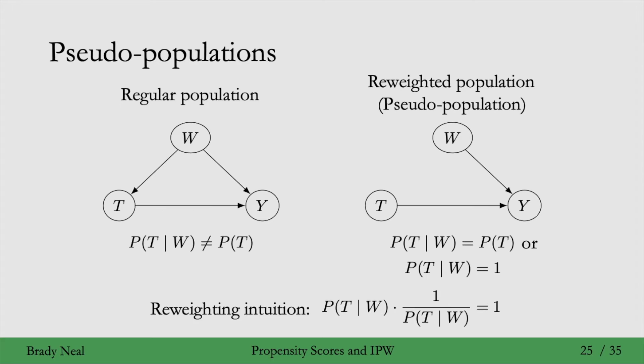More specifically, we re-weight by the reciprocal of the propensity score, by the inverse probability of treatment. The intuition for this re-weighting is that we take this conditional distribution P(T|W) and we just re-weight it by the inverse probability of treatment. Those two cancel, and we end up getting 1. Importantly, the thing that we end up getting does not depend on W. By multiplying by the reciprocal of the propensity score, we've basically deleted this edge from W to T.